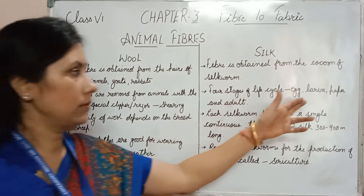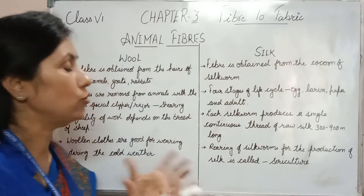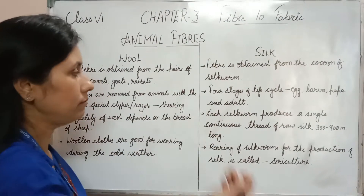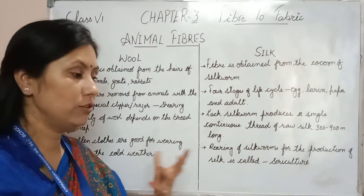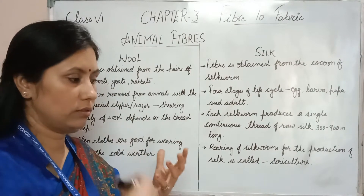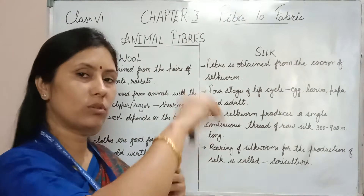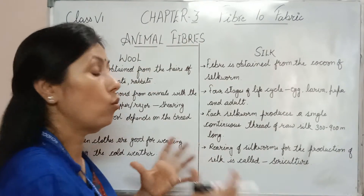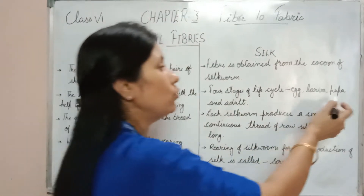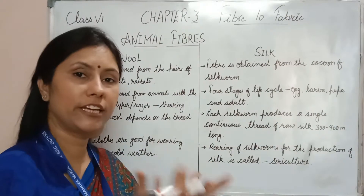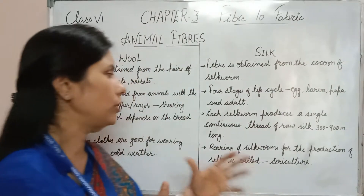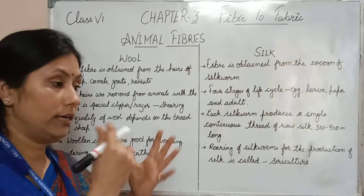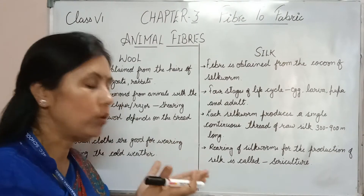Silkworms feed on mulberry leaves. The mulberry plant's leaves are the food of the larvae. In the larva stage, the larva produces a thread. The larva then moves to the pupa stage inside a cocoon, and eventually reaches the adult stage.